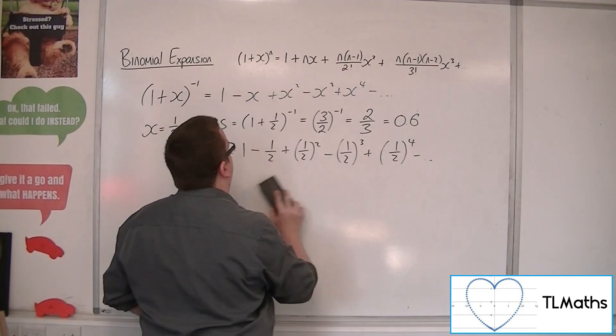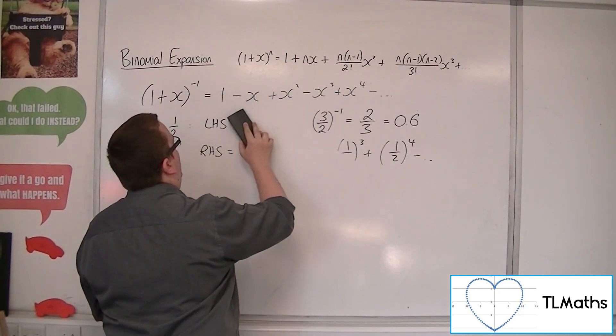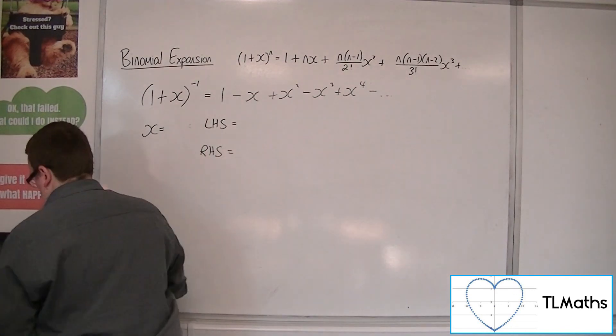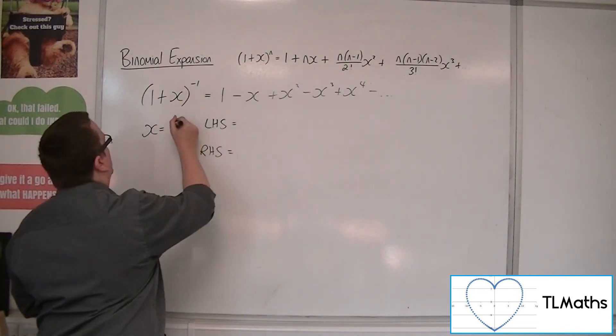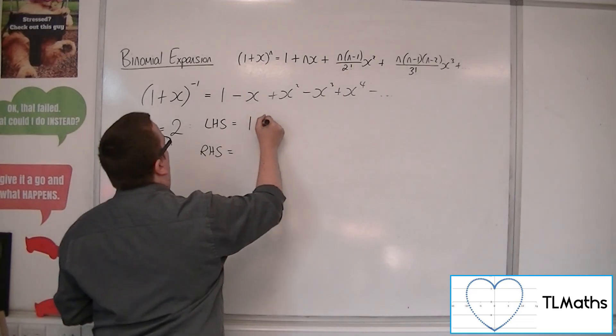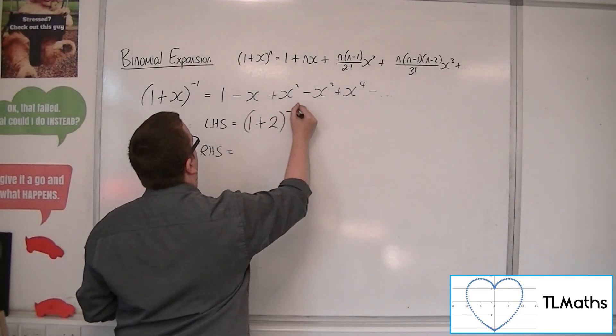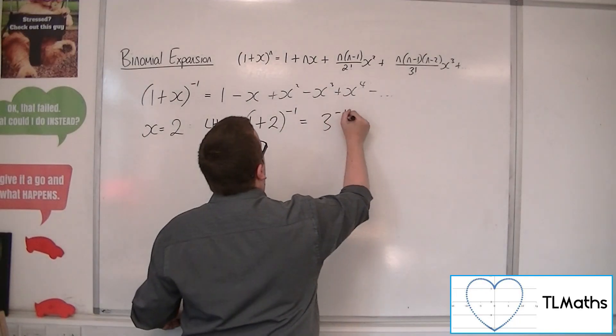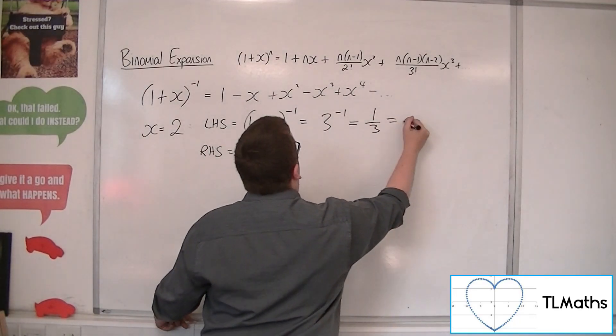So, let's try instead x is 2. So, the left-hand side would be 1 plus 2 to the minus 1. So, what's that? 1 plus 2 is 3. 3 to the minus 1 is a third. So, 0.3 recurring.